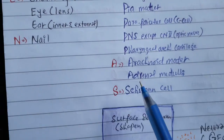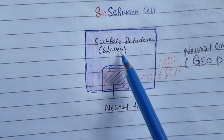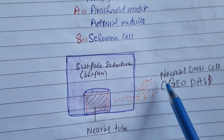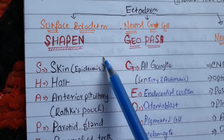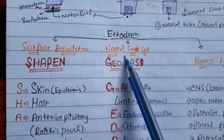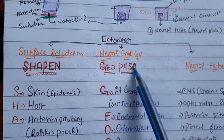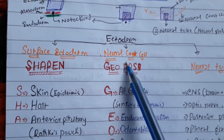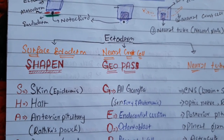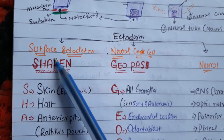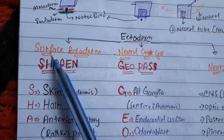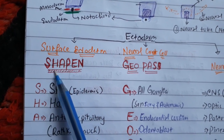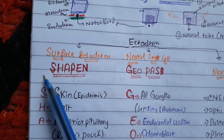Here you can see: surface ectoderm, neural tube, and neural crest. The neural tube I already explained in another video, which covers the derivatives of neural crest. So I will talk here about the surface ectoderm.